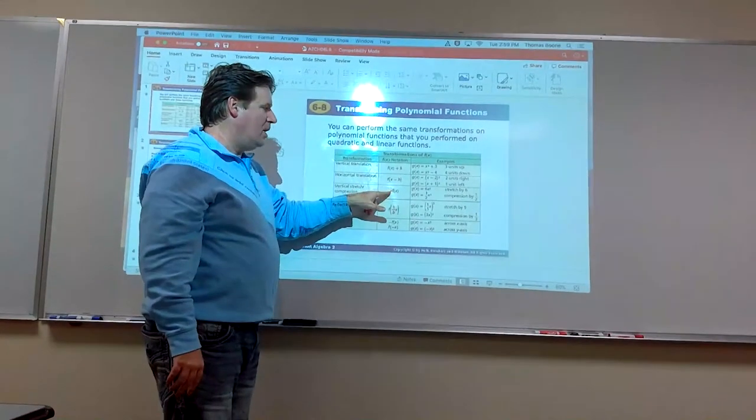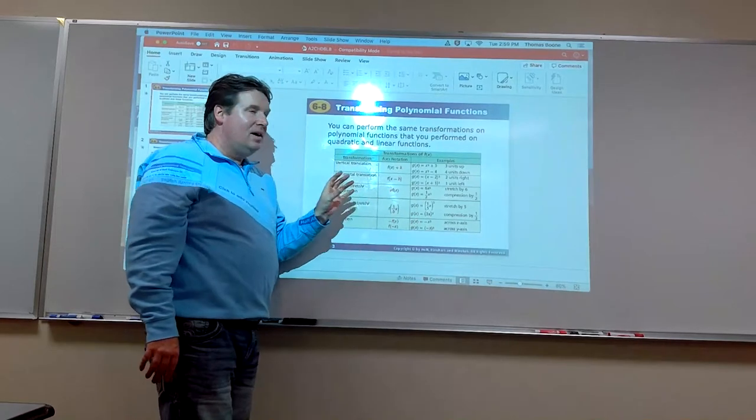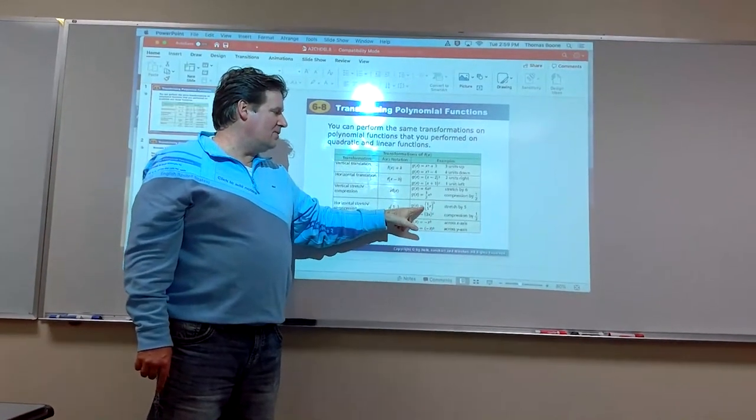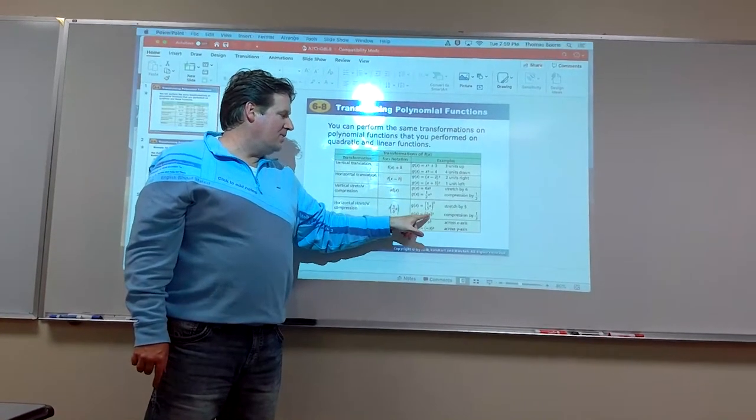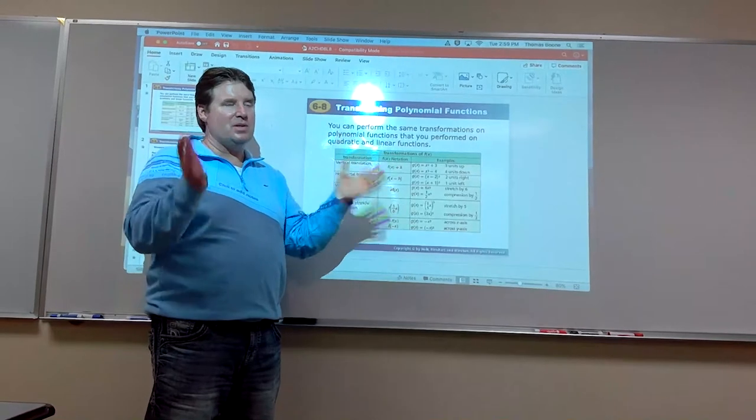If we multiply out in front, that stretches it if bigger than 1, or compresses it if it's a fraction. The horizontals are backwards once again - they're inside the parentheses. If it's a fraction, it stretches horizontally, but if it's bigger than 1, it compresses horizontally.